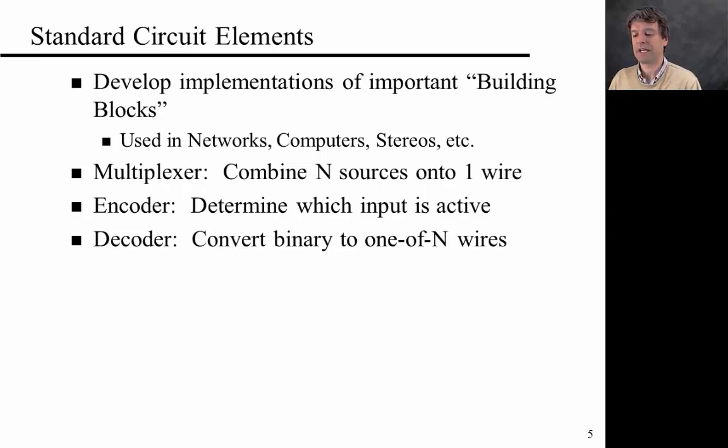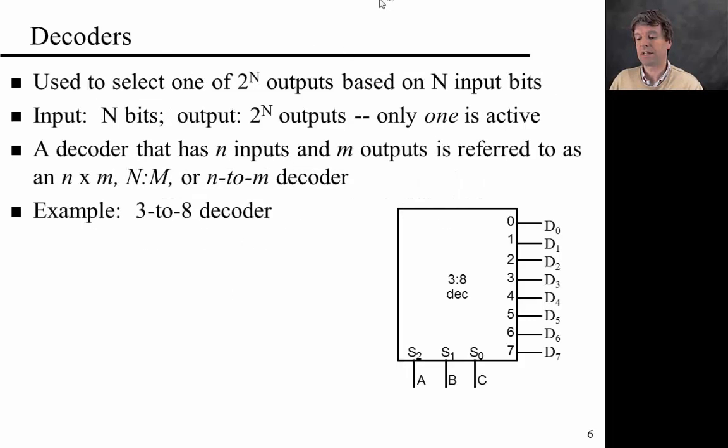Let's continue our investigation of standard circuit elements. What we want to do here, what we started in the previous video, is develop implementations of important building blocks that are used in networks, computers, etc. So the multiplexer, which combines n sources onto one wire, an encoder, which determines which of a series of inputs is active, and the decoder, which converts a binary input to one of n wires. Let's start with the decoder.